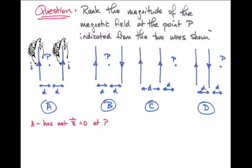And so its magnetic field is coming out exactly opposite to the direction of the magnetic field from the left-hand wire. These two magnetic fields exactly cancel one another because the location P is equidistant between the two wires.